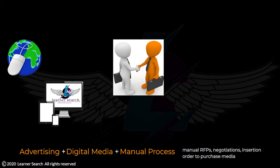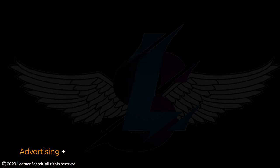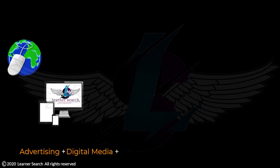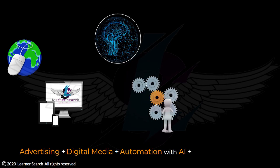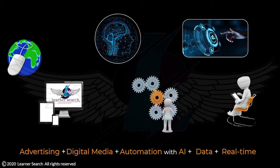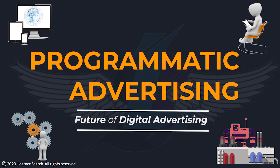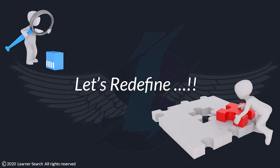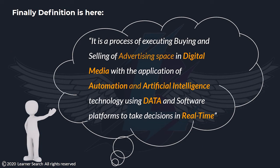Finally, moving from advertising with manual processes to advertising that chooses digital media with the application of automation and artificial intelligence, using audience data and targeting relevant users in real time — this is known as programmatic advertising, which is the future of digital advertising. It is defined as the process of executing the buying and selling of advertising space in digital media with the application of automation and AI technology, using data and software platforms to take decisions in real time.